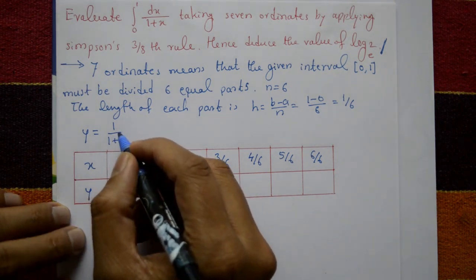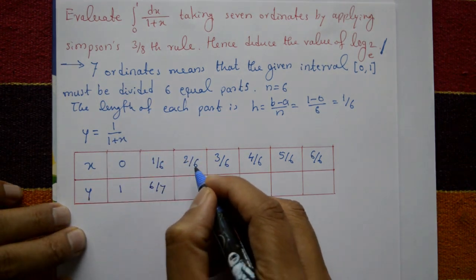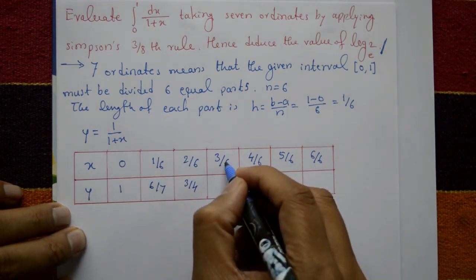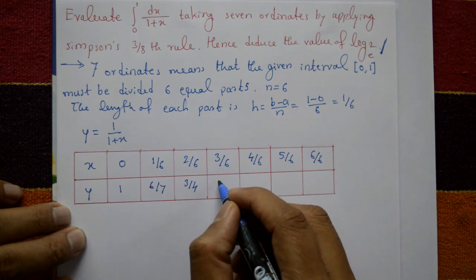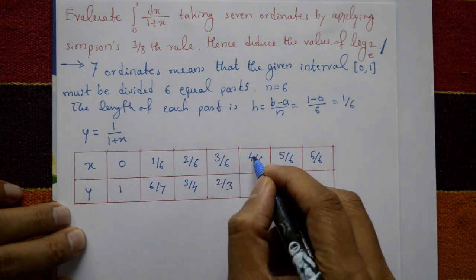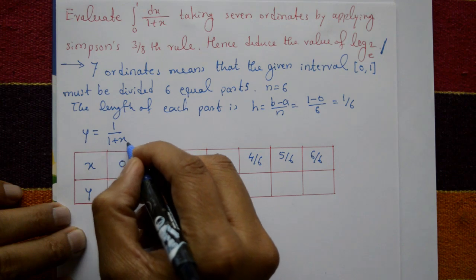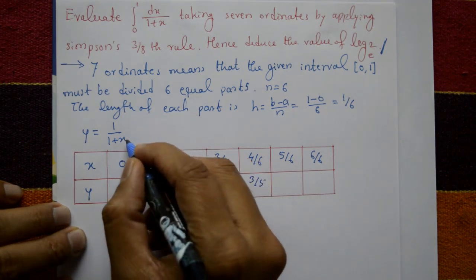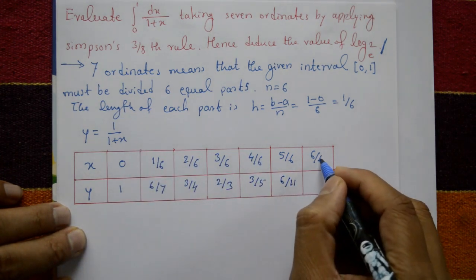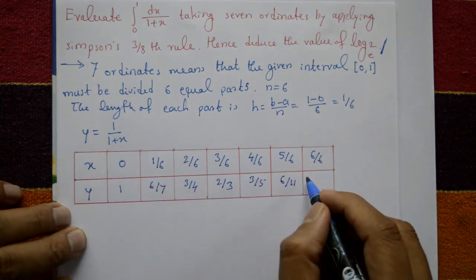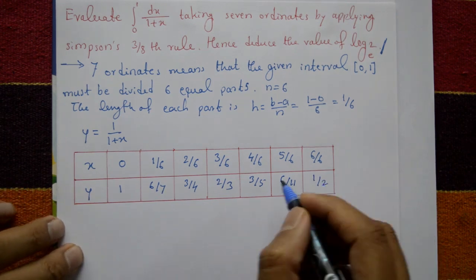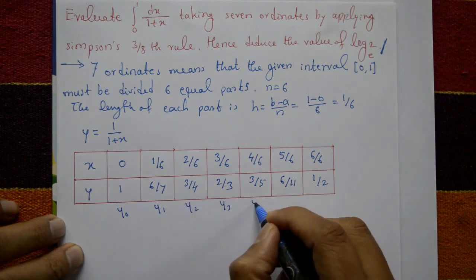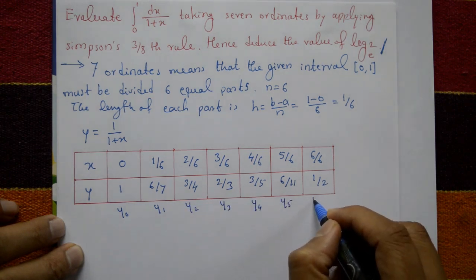Substituting x values into y = 1/(1+x): at x=0, y₀=1; at x=1/6, y₁=6/7; at x=2/6, y₂=3/4; at x=3/6, y₃=2/3; at x=4/6, y₄=3/5; at x=5/6, y₅=6/11; and at x=1, y₆=1/2. These are the seven ordinates y₀ through y₆.